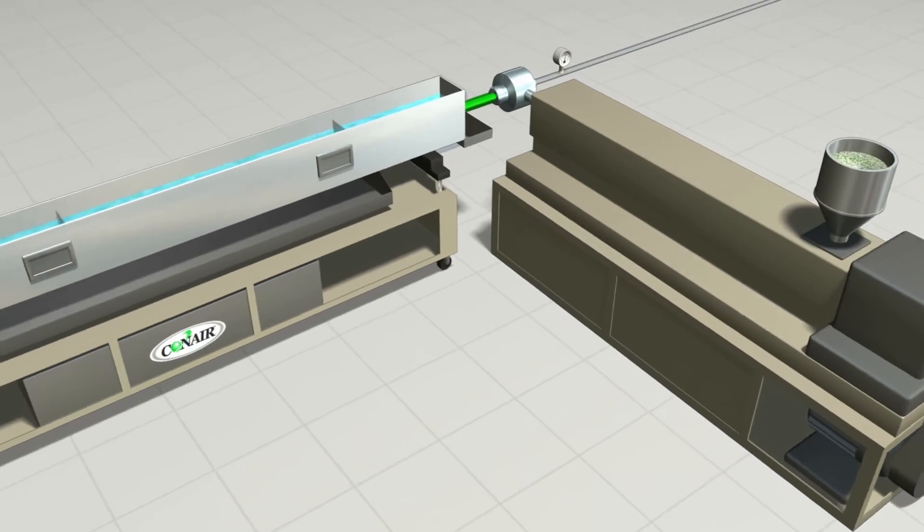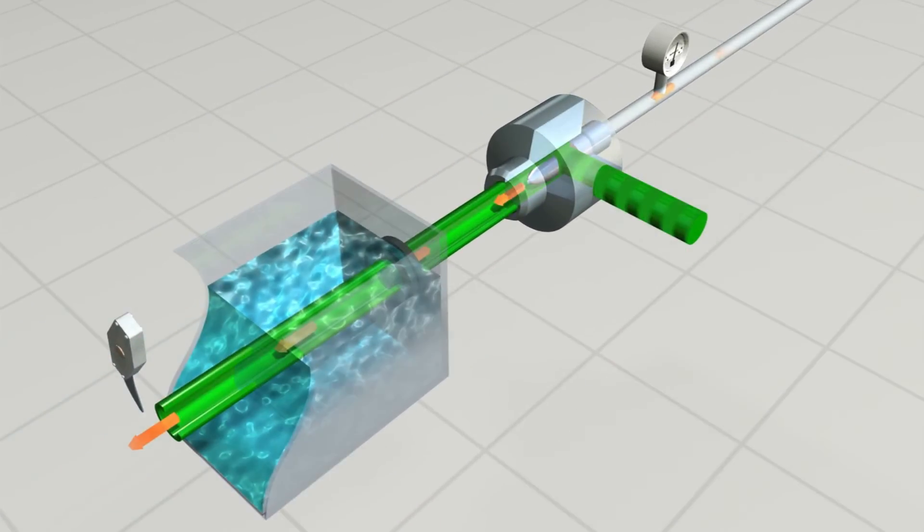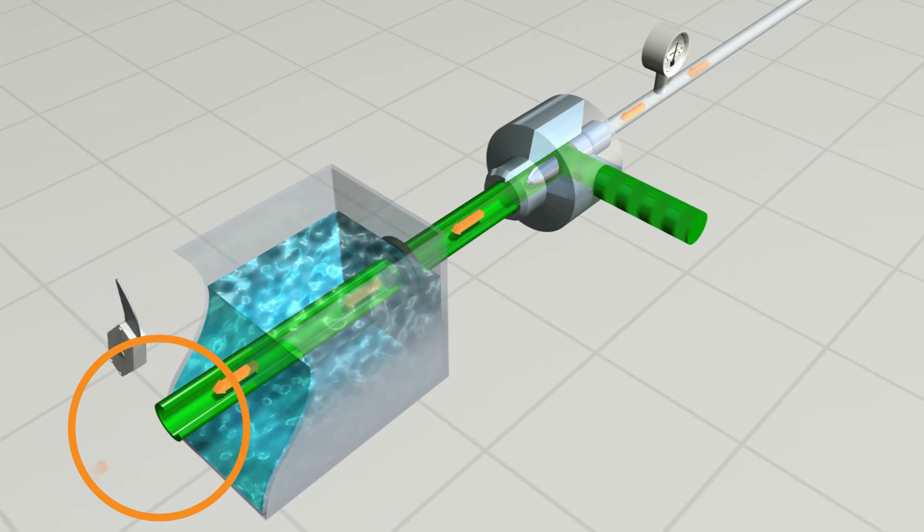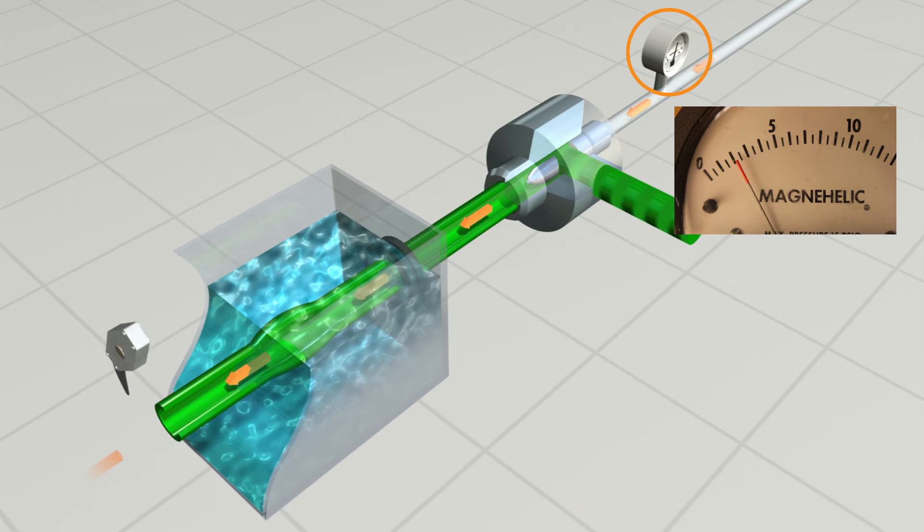But when cutting through the free air process tube, a certain crush of the tubing occurs as shown simulated here, and variations of the air pressure naturally occur. Air flow is temporarily restricted, causing a pressure increase in the tube.